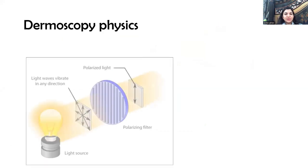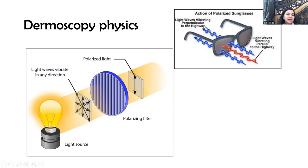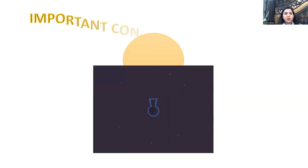This is the same principle as polarized sunglasses, which block light waves vibrating perpendicular to the highway and only allow horizontal ones through, reducing glare. Polarized light vibrates in one direction only and is able to penetrate deeper into the dermis, allowing us to see structures underneath. This is the principle behind polarized dermoscopy.